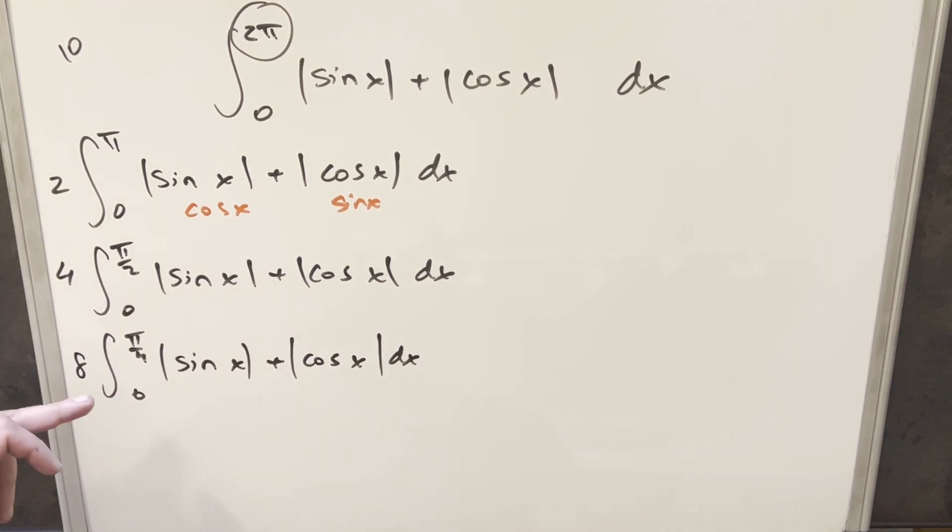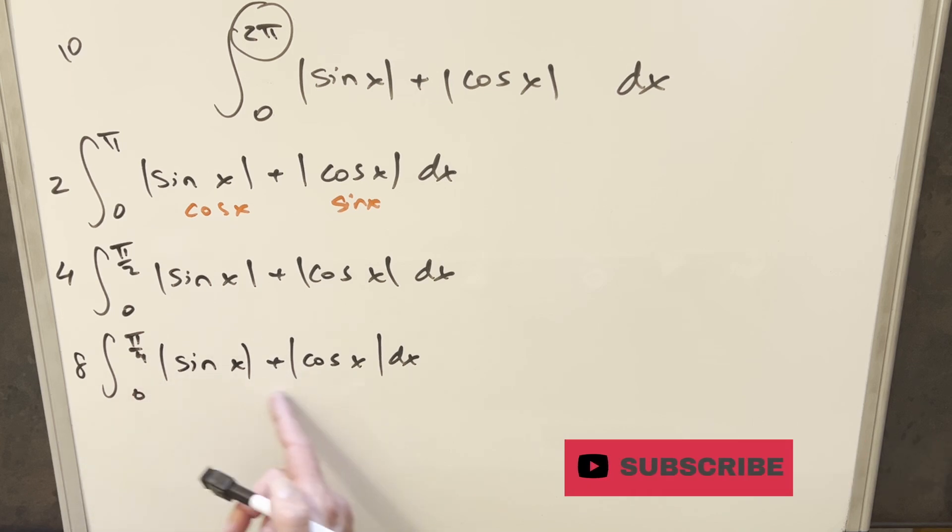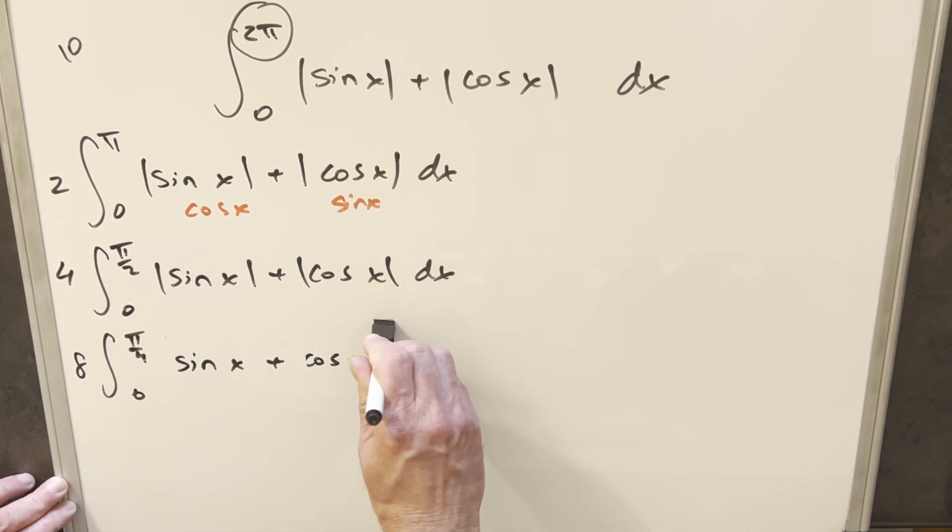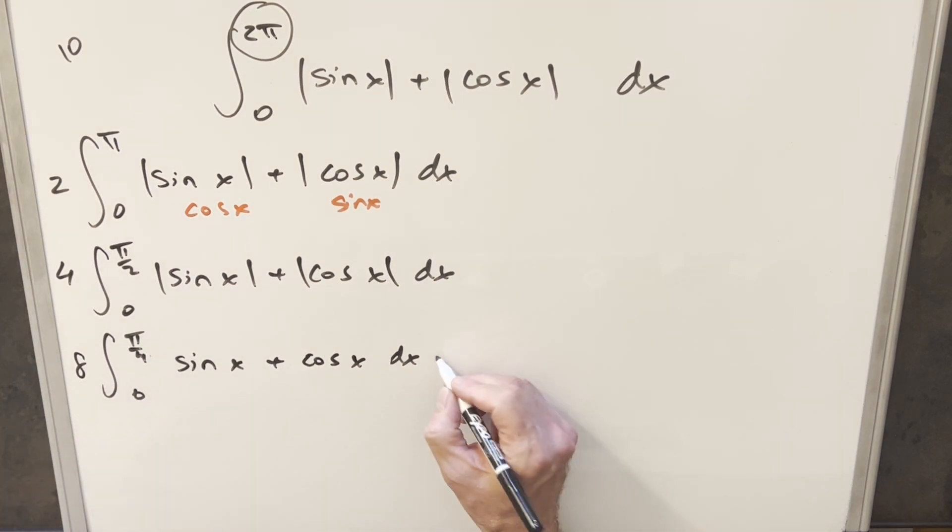But now at this point, I think if we try it again, I don't think it's going to work, but it's also probably going to make the problem harder, because we don't really want to evaluate this at π over 8. But now because we're going from 0 to π over 4, this is first quadrant, so I can drop absolute values on this. Just drop absolute values.